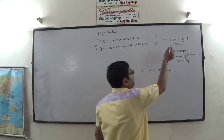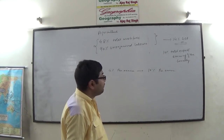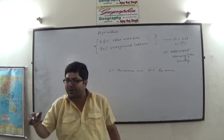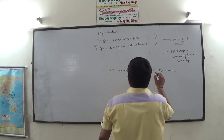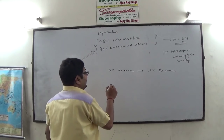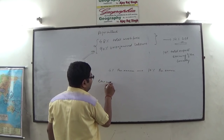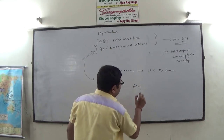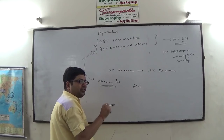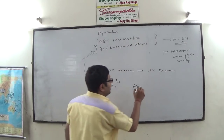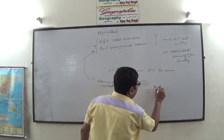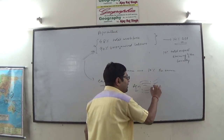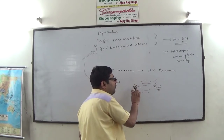If agriculture contributes just 14% of GDP, then how can it be said that if agriculture grows at 4% per annum, only then can the Indian economy sustain growth at 10%? Because the mass scale of people deployed in agriculture — their earnings increase when agriculture grows at 4% per annum, and as a result, when earnings increase, their consumption also increases. After the Green Revolution, the forward and backward linkages of agriculture and industry have been strengthened — as production increased, various flour mills, sugar mills, and rice mills got impetus.